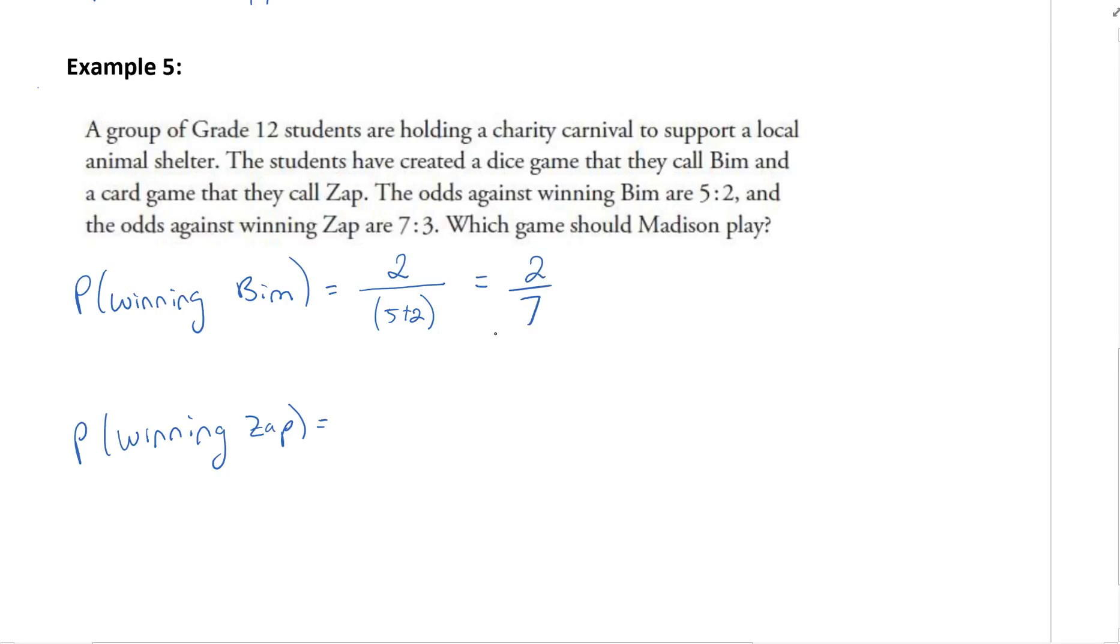For ZAP, same idea. We have 7 plus 3 to get our denominator. This is the odds against winning, so the odds for winning would be 3 to 7. Our numerator would be 3, so that would be 3 out of 10.